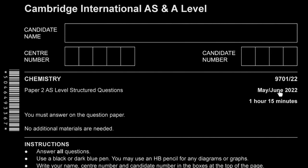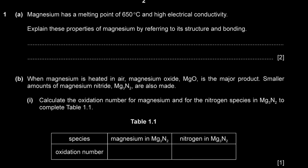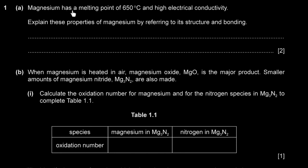We have May/June 2022 Paper 22, question number one. It says magnesium has a high melting point of 650 degrees Celsius and high electrical conductivity. Explain these properties of magnesium by referring to its structure and bonding. We have to explain the relatively high melting point as well as the high electrical conductivity in terms of its structure and bonding. Magnesium is a metal, which means it has strong metallic bonds.